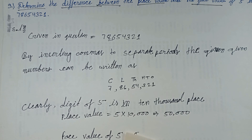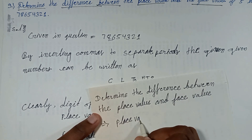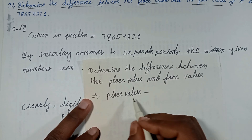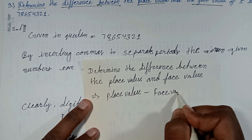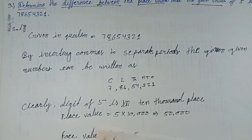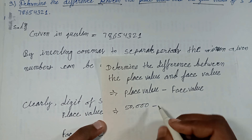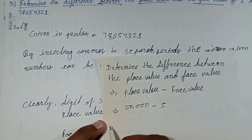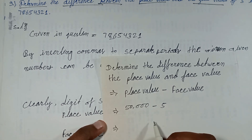Difference = Place value minus face value. Place value is 50,000 minus face value 5.